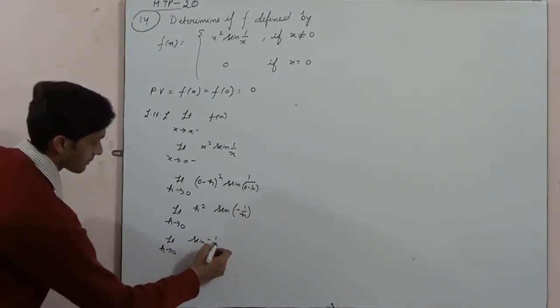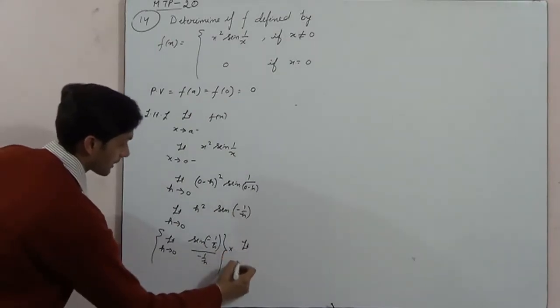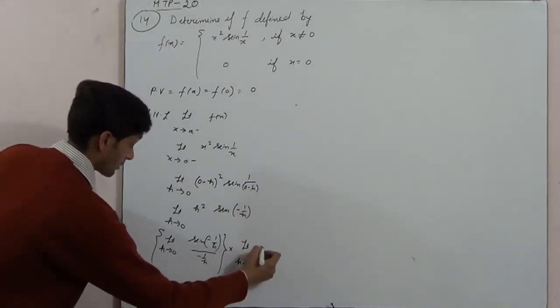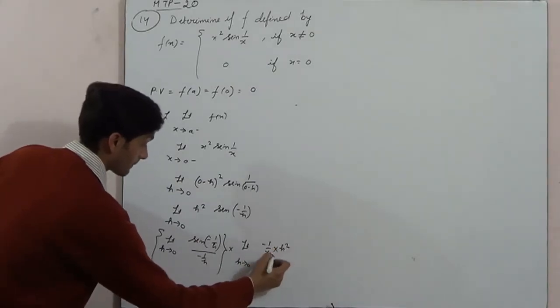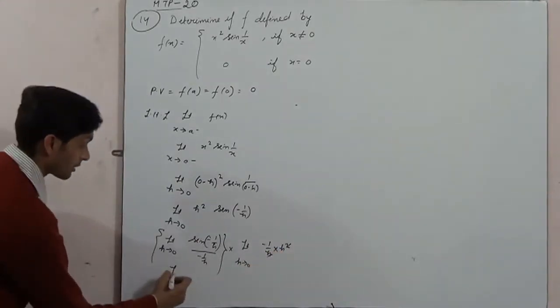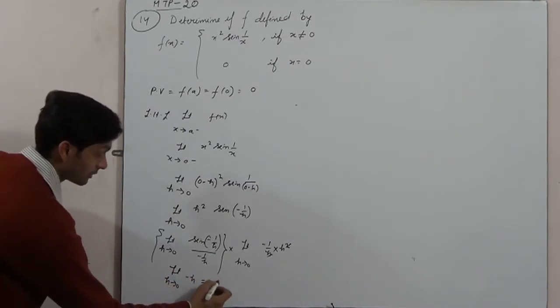Sin minus 1 by h upon minus 1 by h, into limit x tends to 0, minus 1 by h into h square. Limit x tends to 0 minus h, it becomes 0.